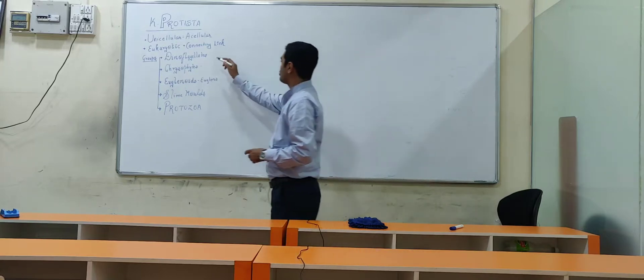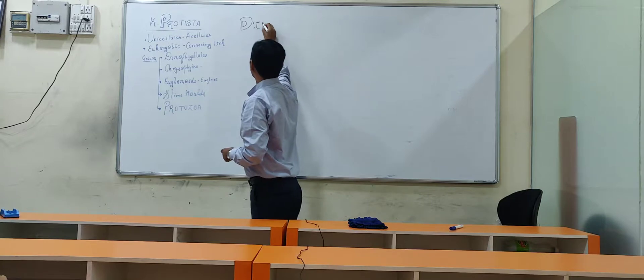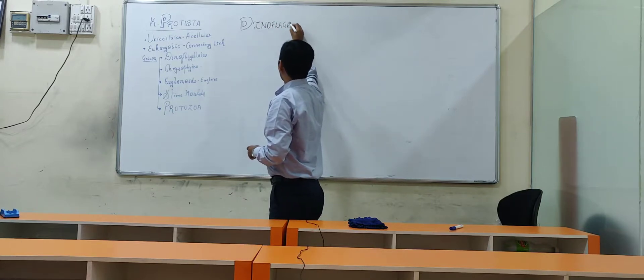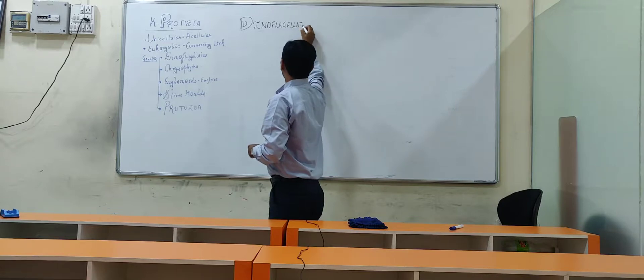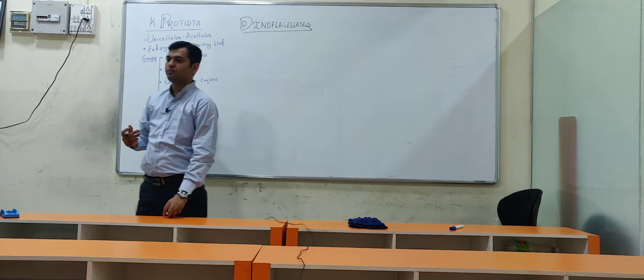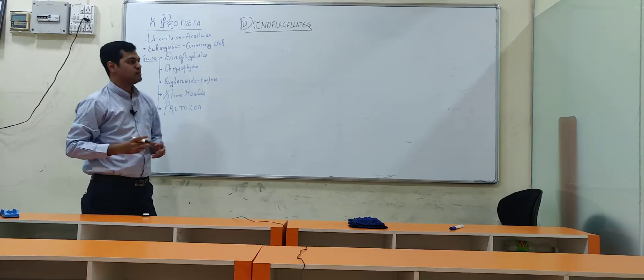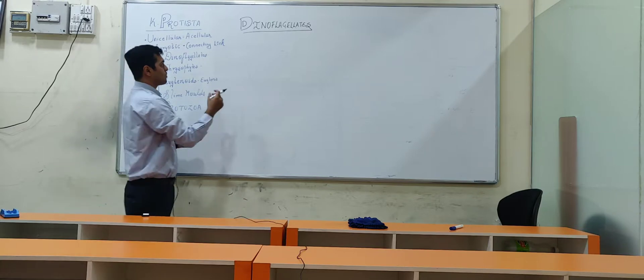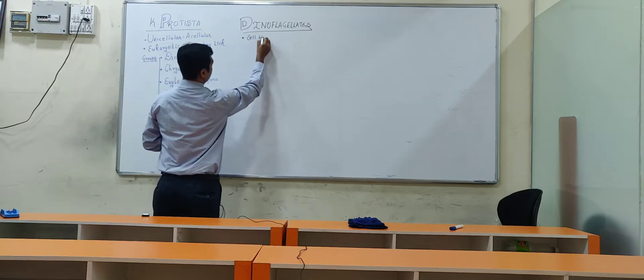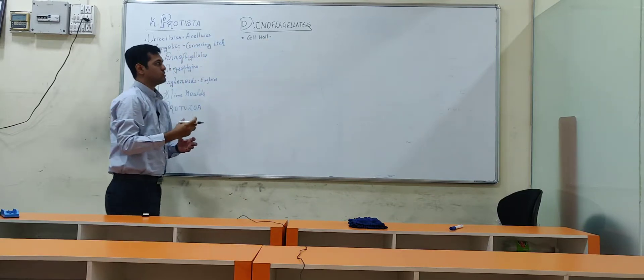So let us start with the first group. The first group is the dinoflagellates. Now dinoflagellates, this group's members, we also call them as plant-like protists. Plant-like because they have some characteristic features similar to plants. One of the features is it contains cell wall which is similar to that which is present in plants.